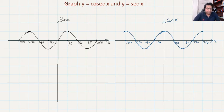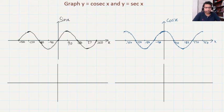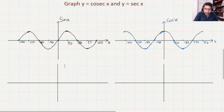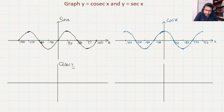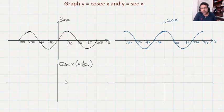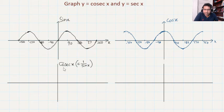Welcome to math. In this video we are going to graph cosec X and sec X. I already have the sine X and cosec graph on the screen. We started with sine X because cosec X is equal to 1 over sine X, so this graph is relevant to sine X. That's why I put the cosec X graph under the sine X graph.